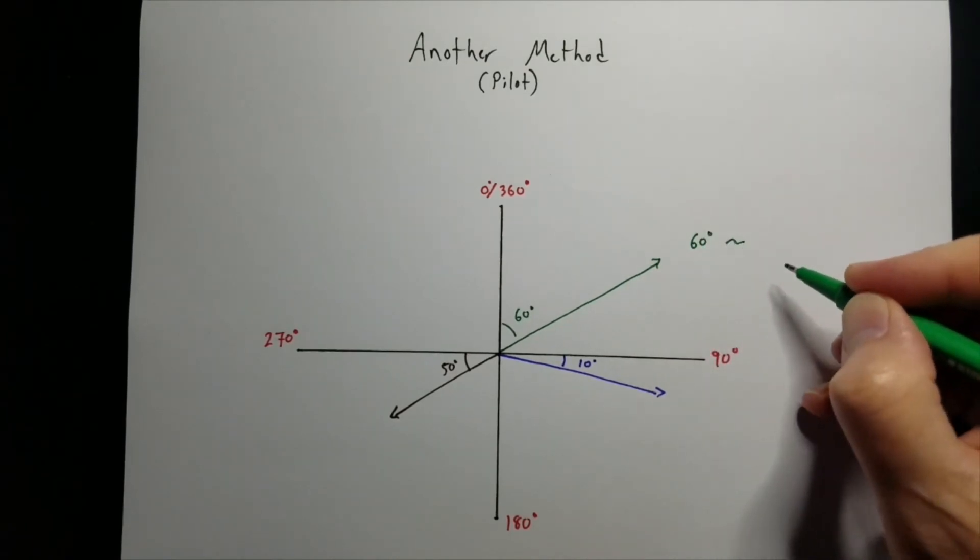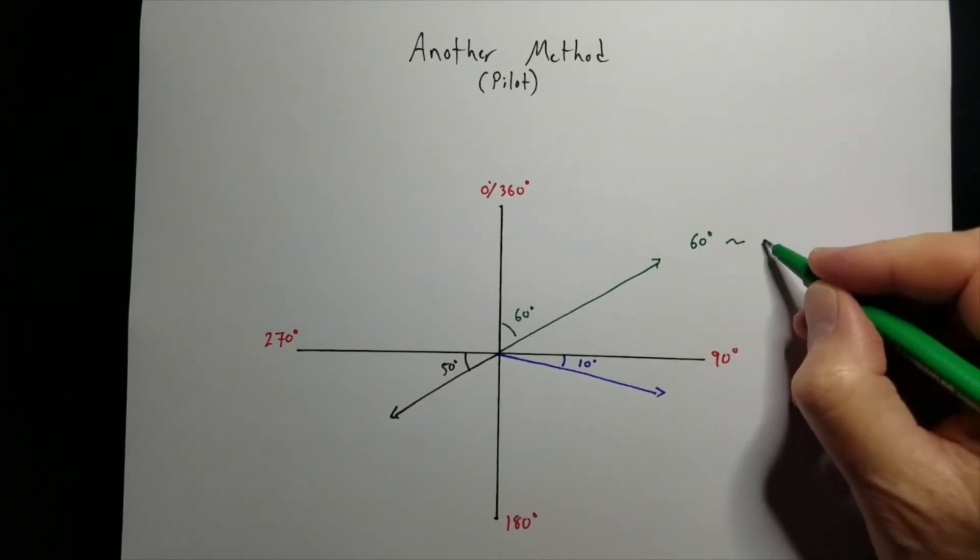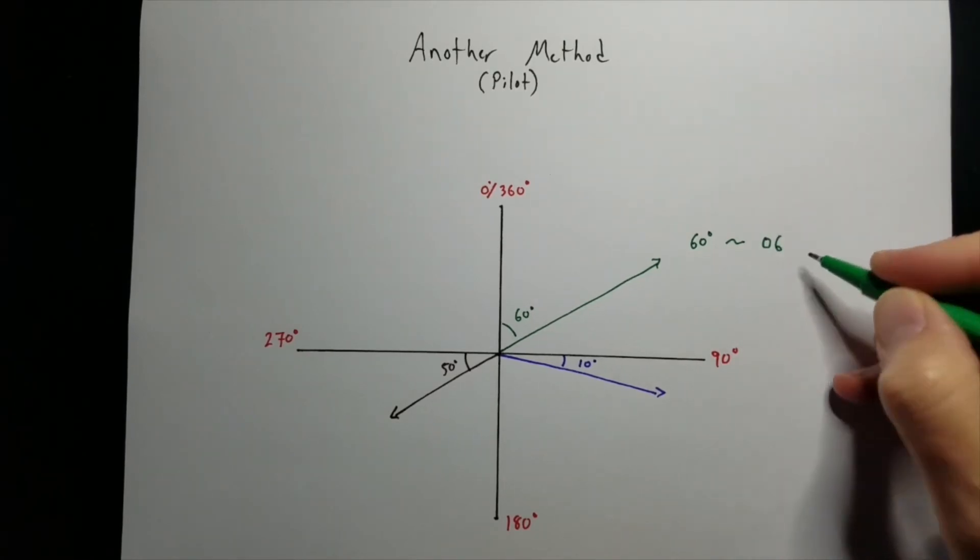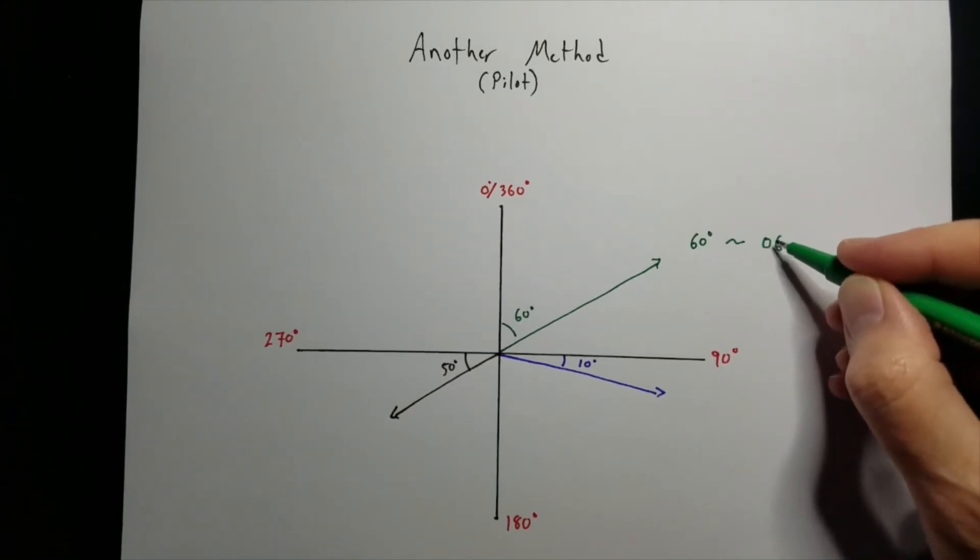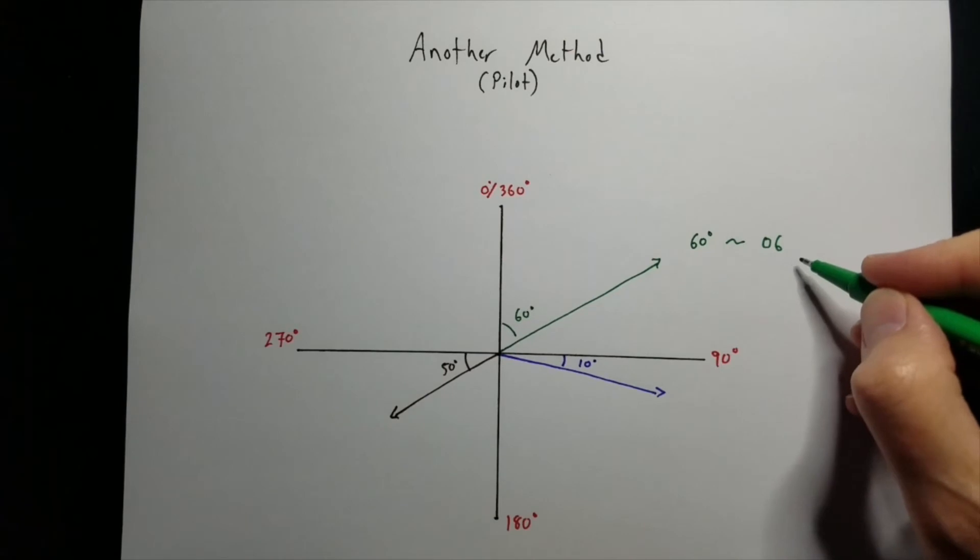Now for the runway that they would land, it would be 0, 6. They drop off the bottom, the back 0. So they just use that one. They put a 0 up front so you won't get confused with that being a 9.